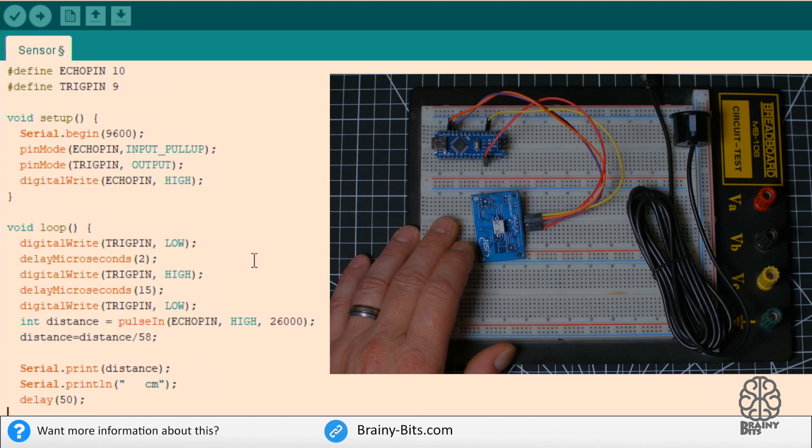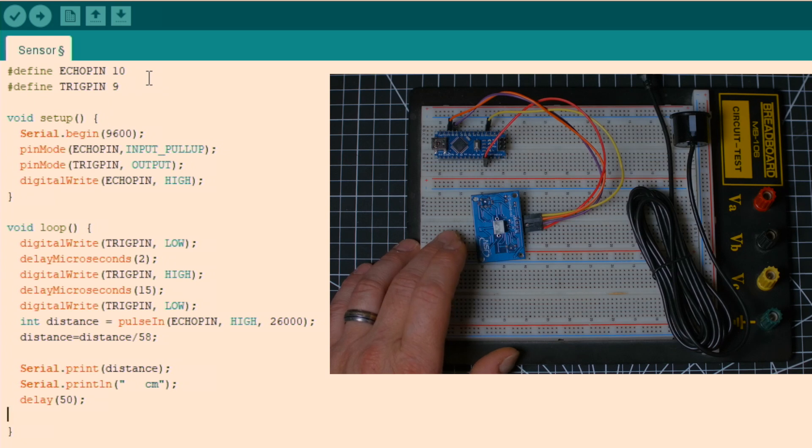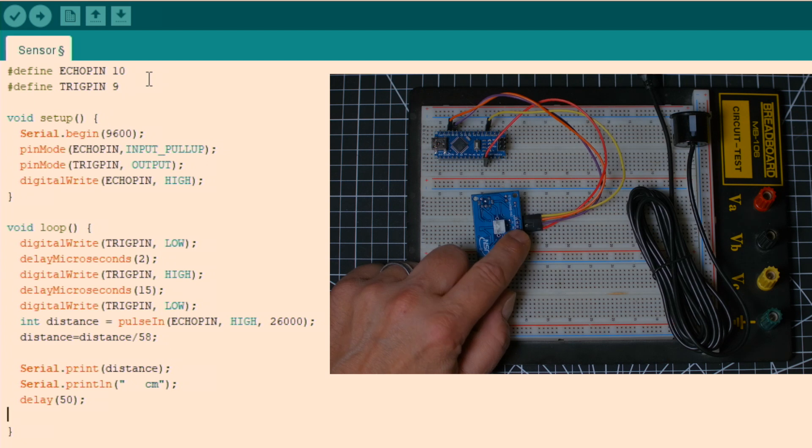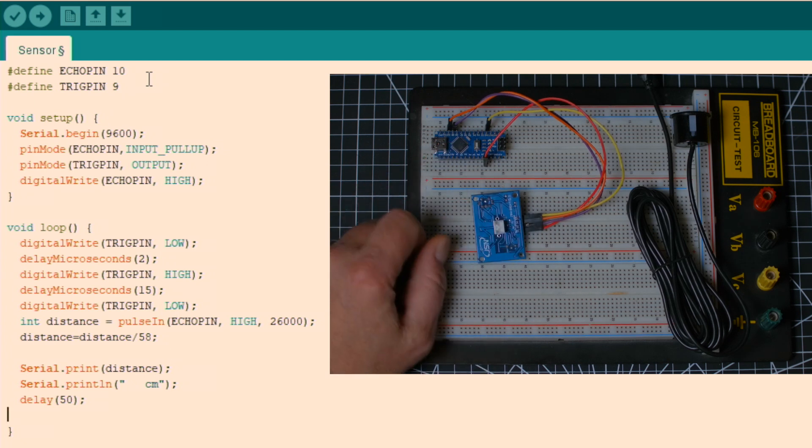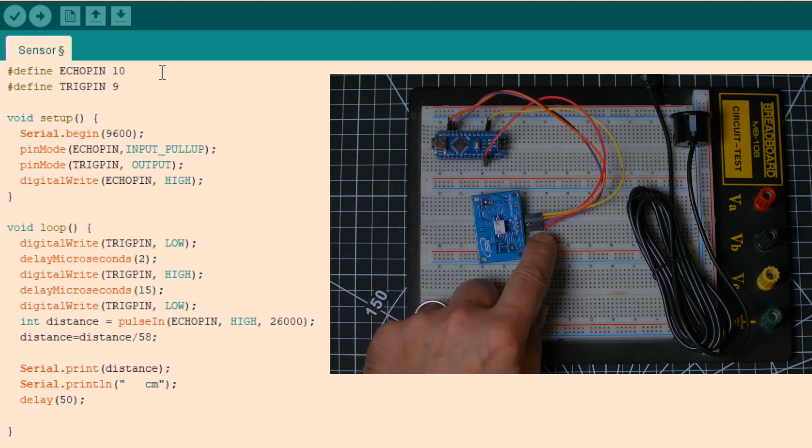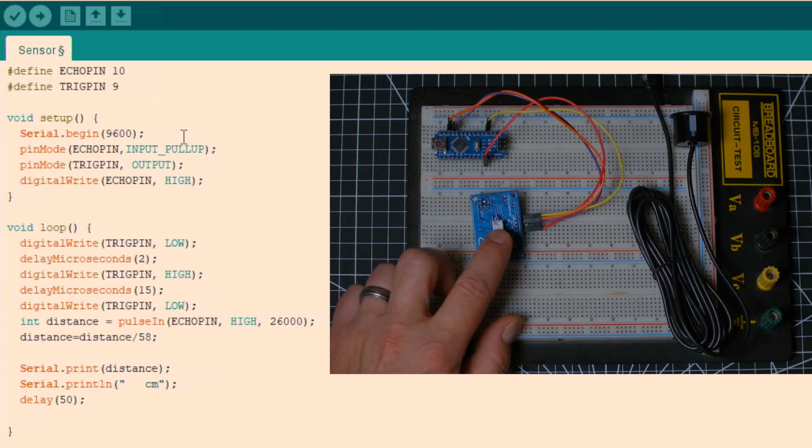Alright, so here's the code defining the pins at the beginning. The echo pin, so the pin 10 of the Nano is connected to the echo pin, and the pin 9 of the Nano is connected to the trigger pin. And then the 5 volts and the ground of the Nano is connected to the pins here. Then we start the serial monitor. That's how we're going to monitor the output of the sensor.